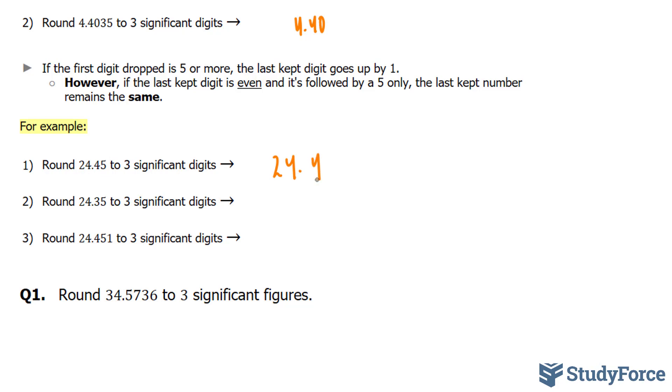What about the next one? Round 24.35 to three digits. So this time, this number is odd, and the number that's being discarded is a 5. The number after that 5 is a 0. So that means this number, given that it's odd, will go up to 24.4.